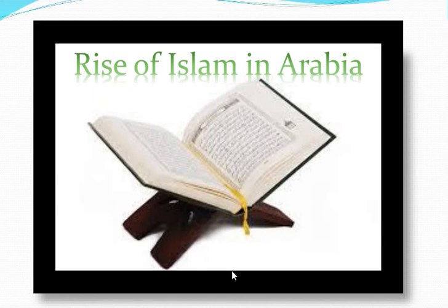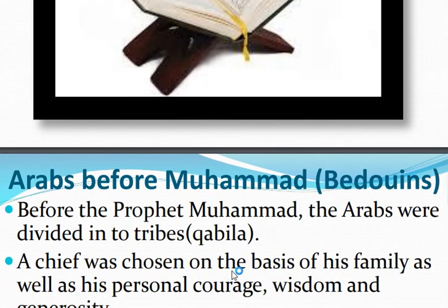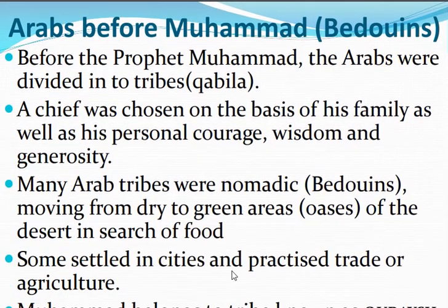So now we will discuss the rise of Islam in Saudi Arabia. Arabs before Muhammad — Muhammad se pahle Saudi Arab mein kya tha. Bedouins means nomadic. So before Prophet Muhammad, the Arabs were divided into tribes — jisko bolate tha kabila. And a chief was chosen on the basis of his family as well as his personal courage, wisdom, and generosity.